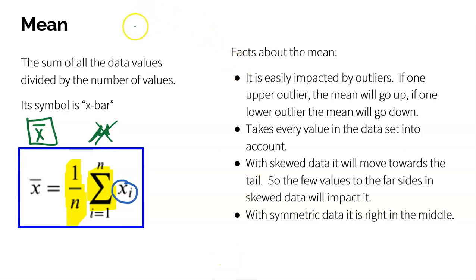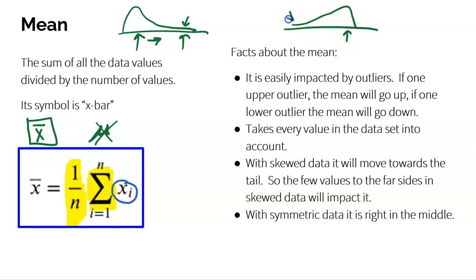With skewed data, the mean will move towards the tail. If your data is skewed to the right, even though the majority of the data is on the left side, there is some data on the right — and some of these values might be outliers. Even though there's only a few of them, the mean has to care about them, so the mean might move a little bit to the right towards that tail. Same thing if we have data that's skewed to the left: these low values matter to the mean, it can't ignore them, so the mean ends up moving a little bit to the left towards that tail.